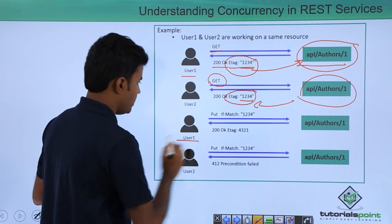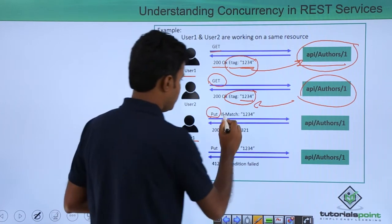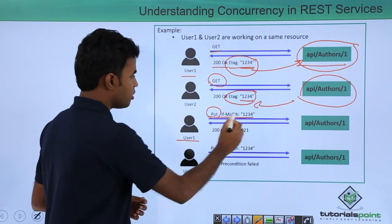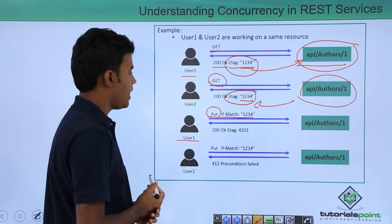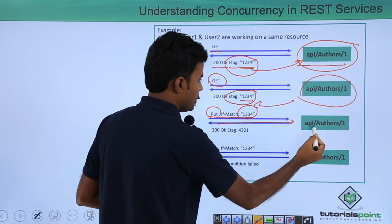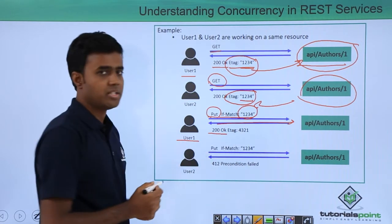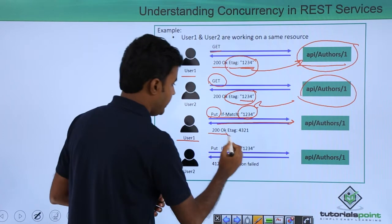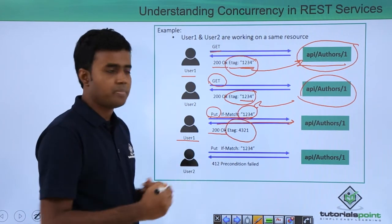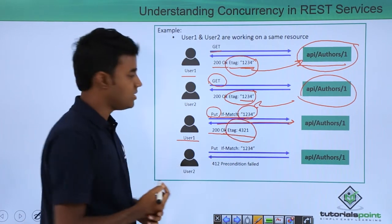Now, if user 1 sends a PUT request with an If-Match header of 1234, he is referring to this same ETag. He updates the resource, identifying it with the help of the ETag. The server or API responds saying the update is done, but the ETag for that particular resource has now changed because the contents have changed. Basically, it generates the ETag by running a hash on the data.